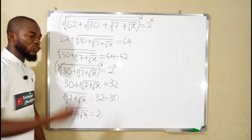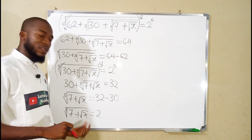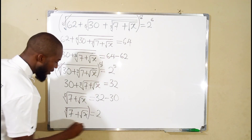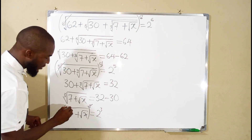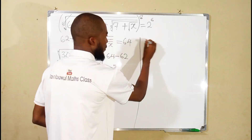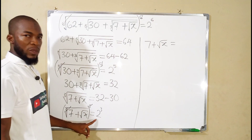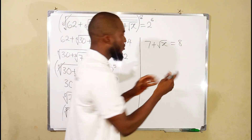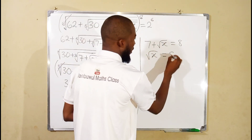Our main target is to find the value of X. The outermost root is now the cube root, so we take the power of 3 from both sides. This cancels the cube root, leaving 7 plus the square root of X equals 2 to the power of 3, which is 8. Bringing real numbers together, the square root of X equals 8 minus 7.